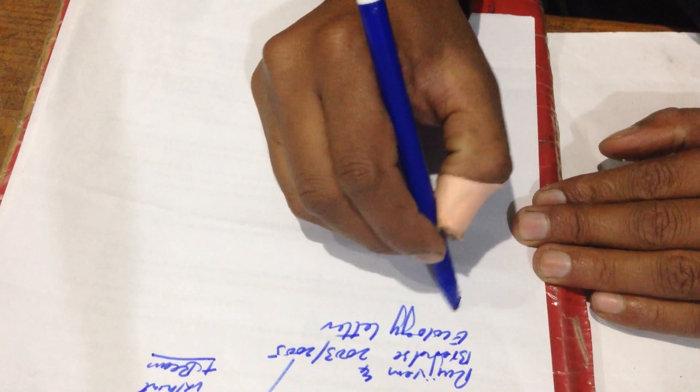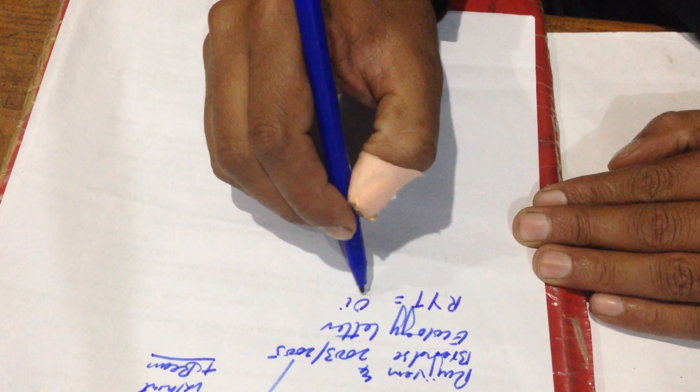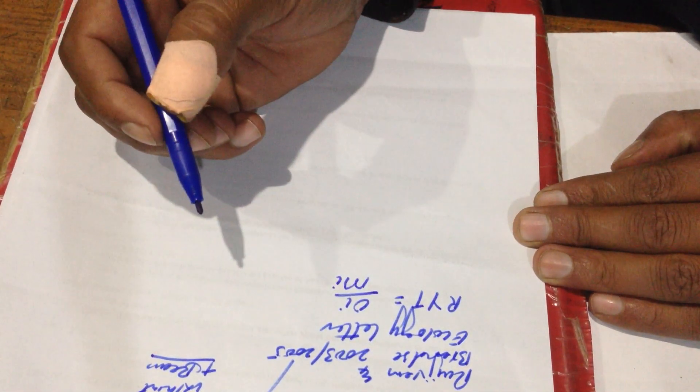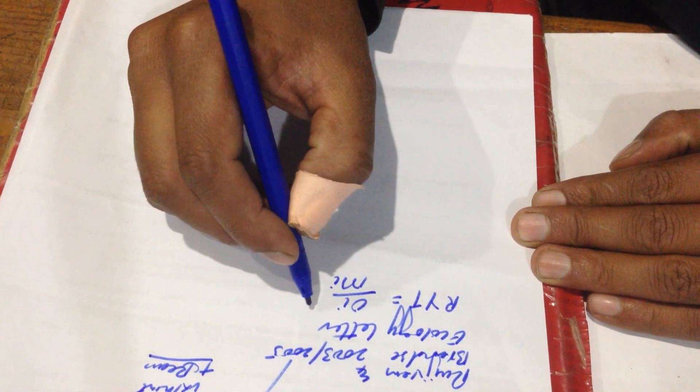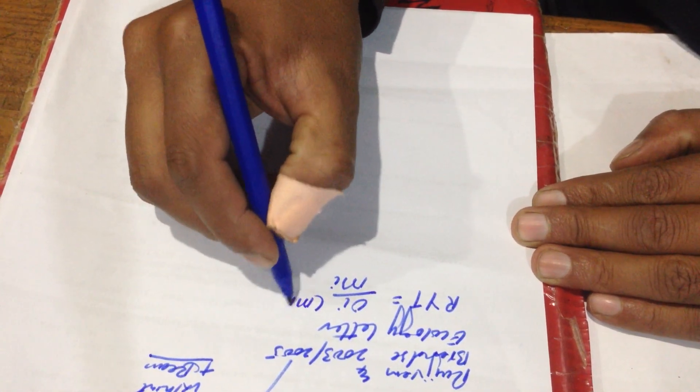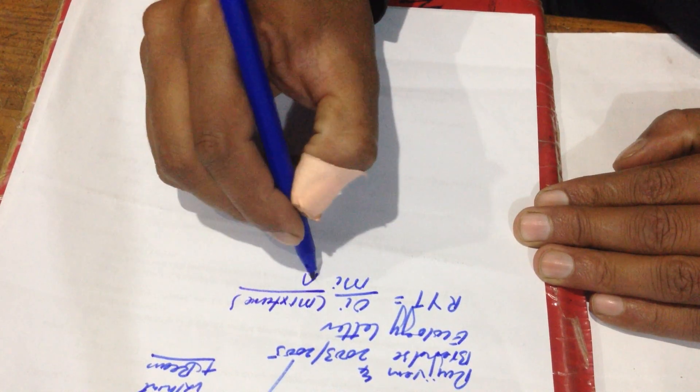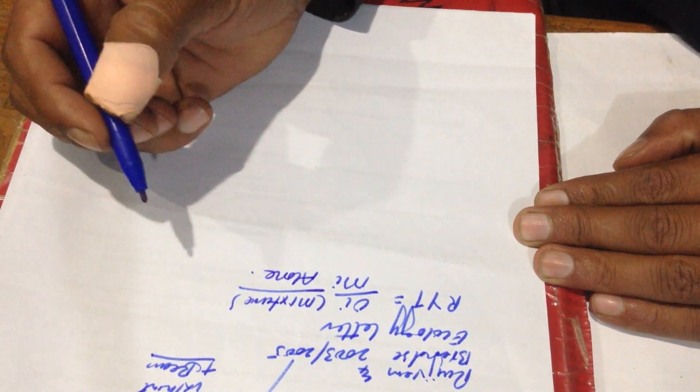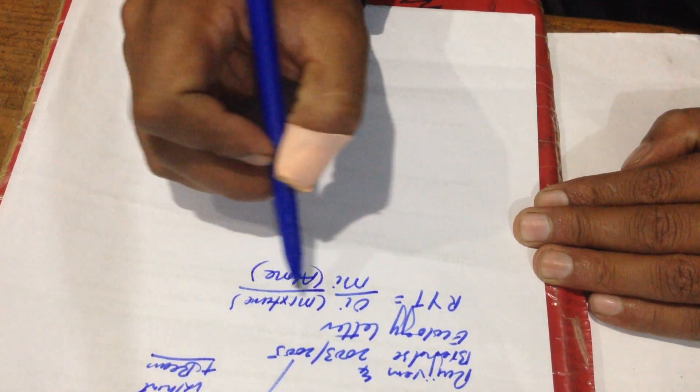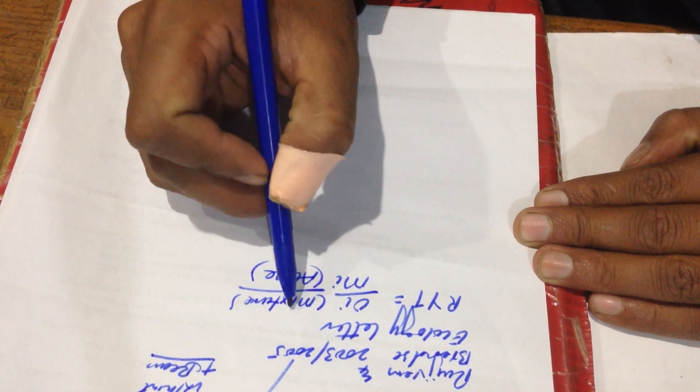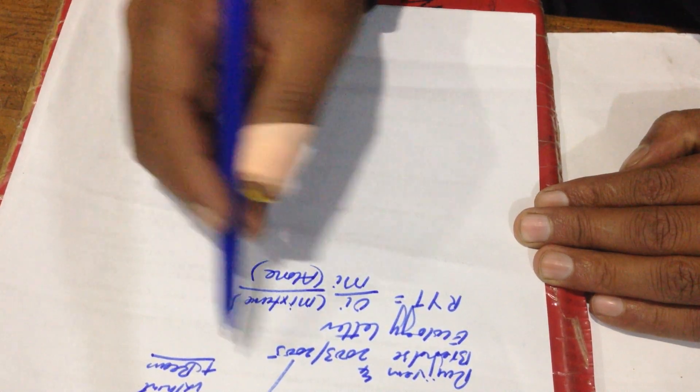The formula for relative yield total is plant in combination or in mixture divided by plant grown alone. So for example...